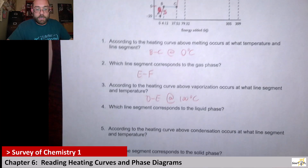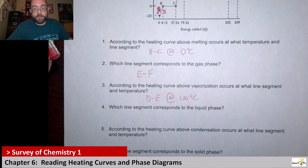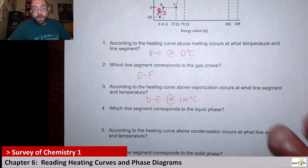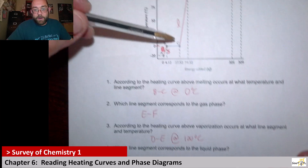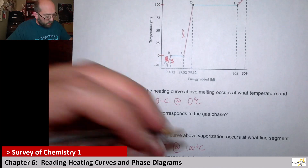Next up it says: which line segment corresponds to the liquid phase? I'd already labeled that — there's our liquid from C to D.